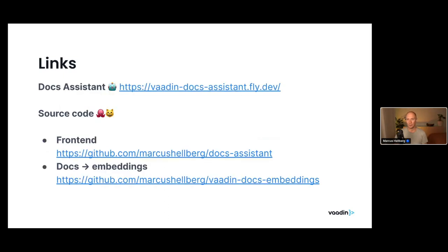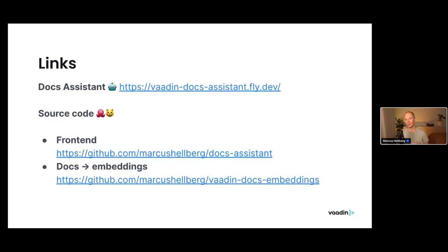I want to share a couple of links before we get to Q&A. The assistant is at vaadin-docs-assistant.fly.dev. You can find the front-end code — the Hilla app that orchestrates the whole thing — on my GitHub under docs-assistant. If you want to look at the implementation for splitting our AsciiDoc into embeddings, you can find that on vaadin-docs-embeddings. In our case we're using AsciiDoc, which turned out to be not as well supported by LangChain and other tools, so I had to do more work myself. If you're using Markdown, that process would be a lot easier, and I assume it'll get easier in the coming months.